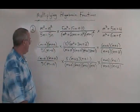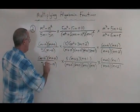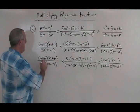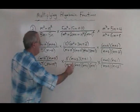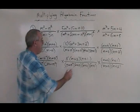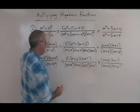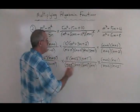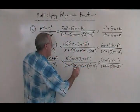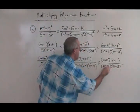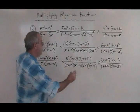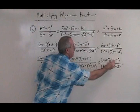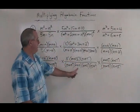Now I am ready to do my canceling. I have an m minus n and m minus n. I have a 5 and a 5. I have an m plus n and m plus n. I have an m plus 1 and m plus 1. I have an m plus 2 and m plus 2. I have an m plus 4 and m plus 4. I have an m plus 1 and m plus 1. All that's left is this.